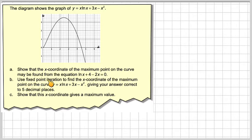Use fixed point iteration to find the x coordinate of the maximum point on the curve y equals x ln x plus 3x minus x squared, giving your answer correct to 5 decimal places, and then show that this x coordinate gives a maximum value.